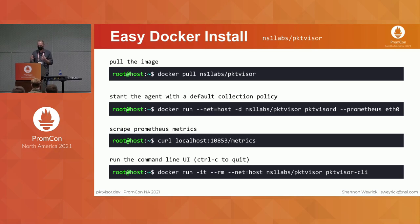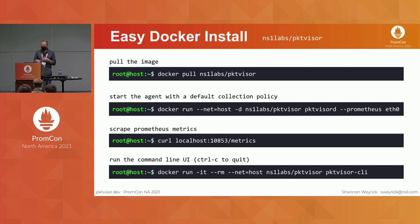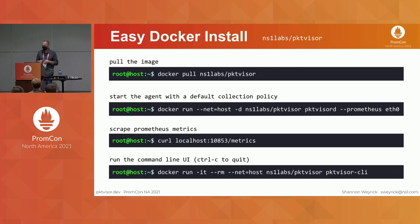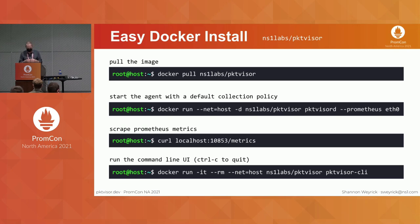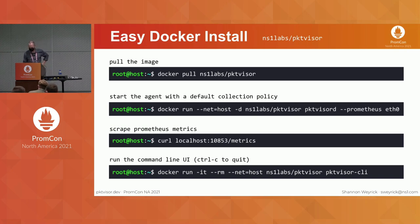We've tried to make Packetvisor very easy to use and install — it's available as a Docker container and as a static binary. Here's a command line that will start with a very simple default collection policy: run the Packetvisor daemon with Prometheus support, give it an Ethernet interface, and you get a familiar endpoint to collect Prometheus metrics directly. The command-line interface is included inside the Docker container so you can attach and watch metrics directly on the node.